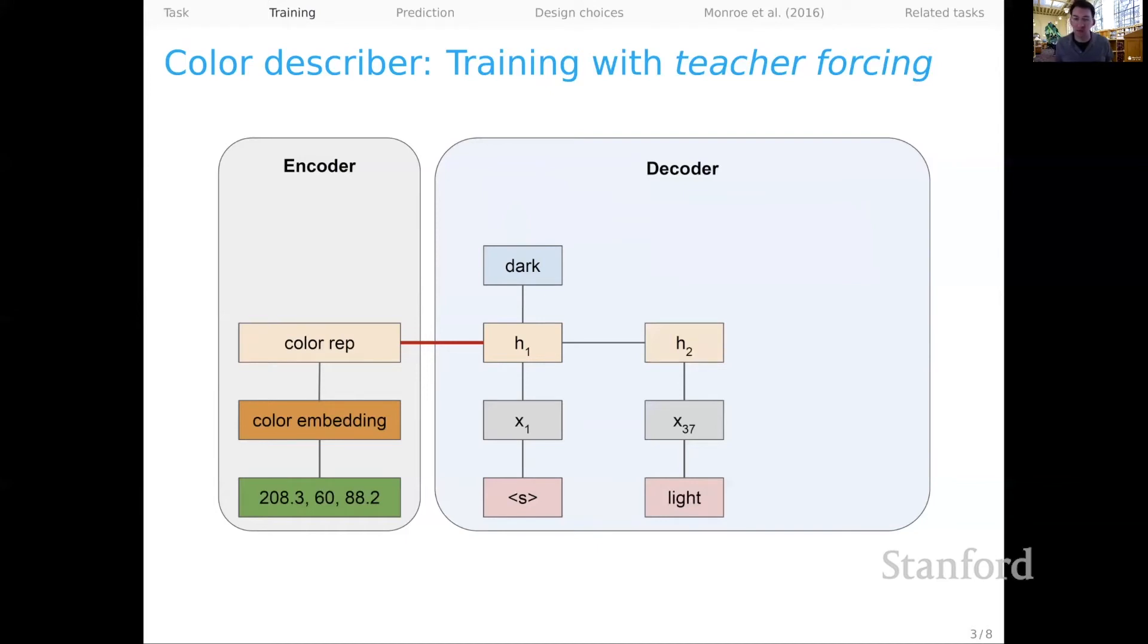We get our second hidden state for the decoder as a combination of the embedding x37 and the previous hidden state. And we make another prediction. And in this case, our prediction is blue. And that's the actual token. And life is good for a little bit. And then we proceed with a third time step.